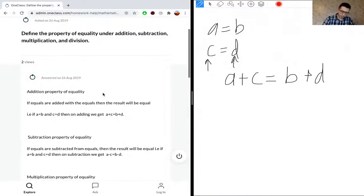And then for subtraction, so we'll say this is the scenario for addition. For subtraction, we'd have a minus c equals b minus d. So here the position of b and d is important.